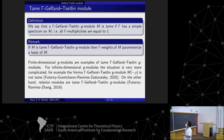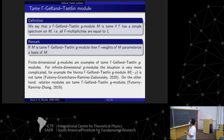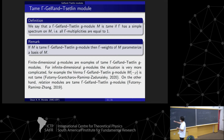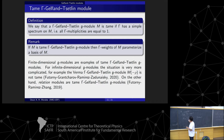But the special case is the Harish-Chandra tame module. In this case, Gamma has all multiplicities equal to 1.